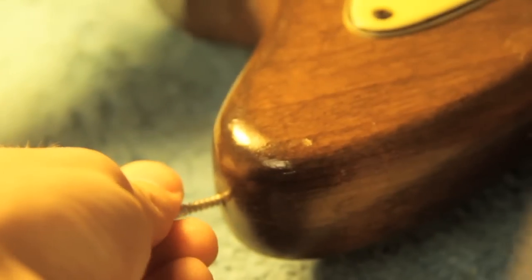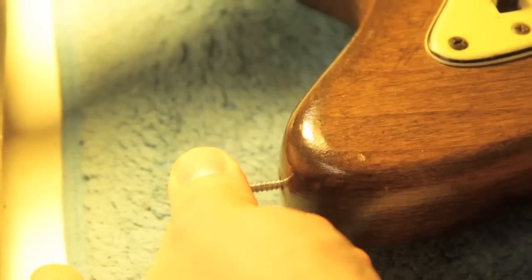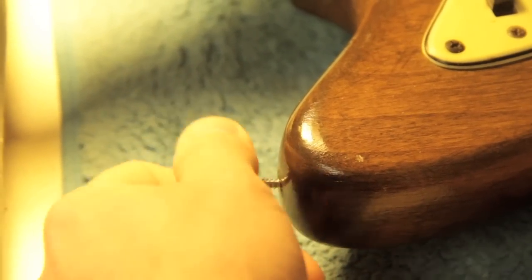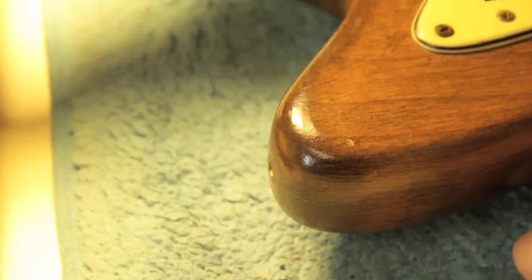If you can twist it all the way in by hand, then you should probably add another piece. But since it starts to stop and require a screwdriver, I think that's the only one we're going to need there.